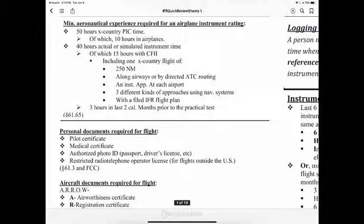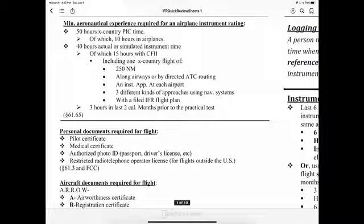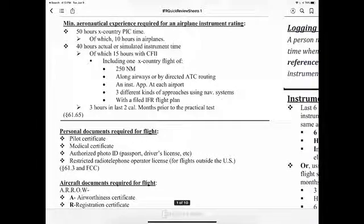The cross-country flight must include an instrument approach at each airport, three different kinds of approaches using navigation systems, and a filed IFR flight plan. Also, at least three hours must be in the last two calendar months prior to the practical test.